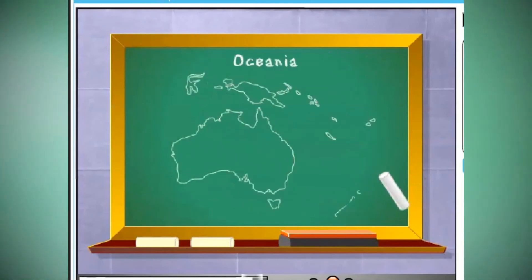Geography affects people's lives. These are the major resources and land use of Oceania.